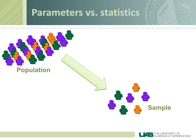A parameter is a value that describes some characteristic of an entire population. Lowercase Greek letters are used to represent parameters. For example, let's say we collect data on the average age of every single person in a population. We could do this if the population was small enough, like the U.S. Senate. If we calculate their mean age, we could report it as mu, which is the Greek symbol for a population mean, and report it as mu equals 66.2 years.